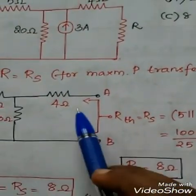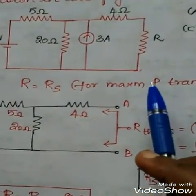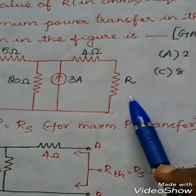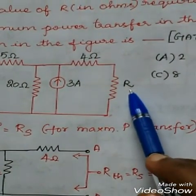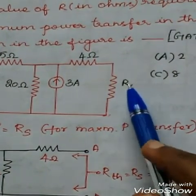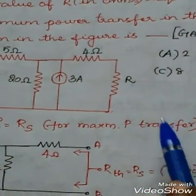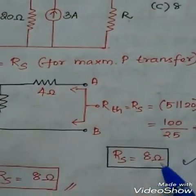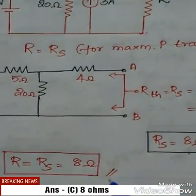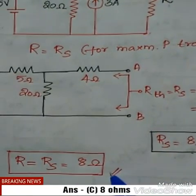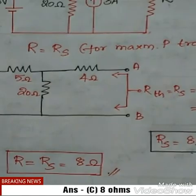The source resistance value is 8 ohms. For maximum power transfer, the load resistance value will be equal to the source resistance RS, which equals Rth. The value of Rth is 8 ohms. So R will be equal to 8 ohms — that is the solution.